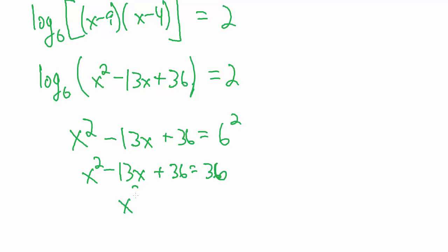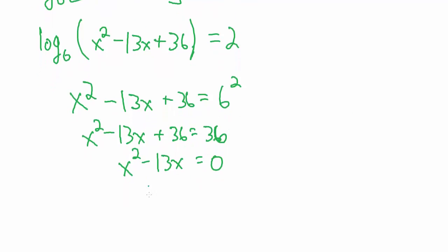So we get x squared minus 13x equals 0. What a nice coincidence that this worked out to be so nice.